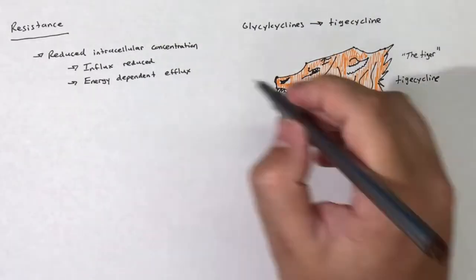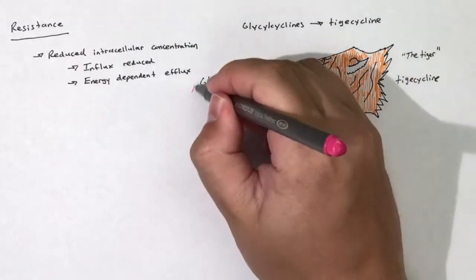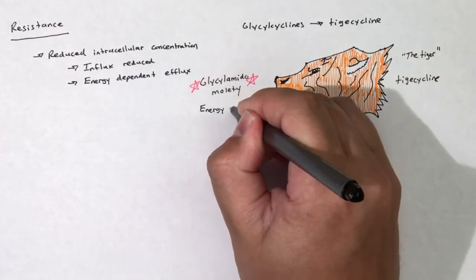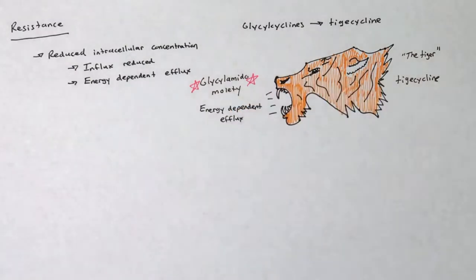Interestingly, the glycylcyclines possess a glycylamido moiety that reduces their affinity for tetracycline energy-dependent efflux transporters. Because of this, glycylcyclines are able to overcome tetracycline resistance mediated by active tetracycline efflux. The ability of the glycylcyclines to overcome drug efflux is limited, as glycylcyclines are still effluxed by the pumps found in Pseudomonas aeruginosa and Proteus species.